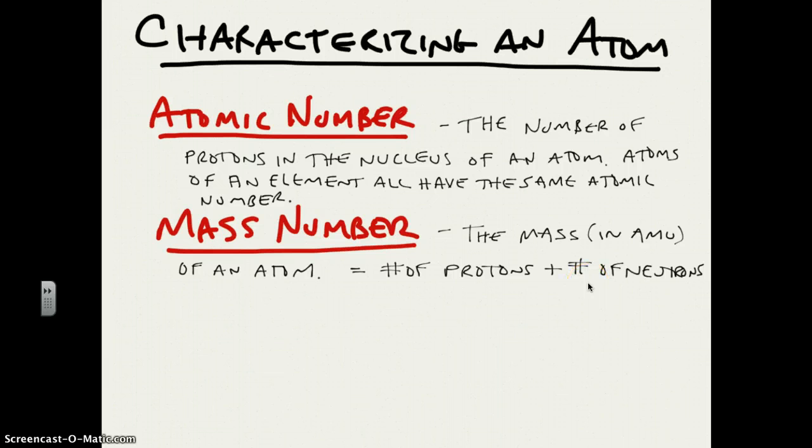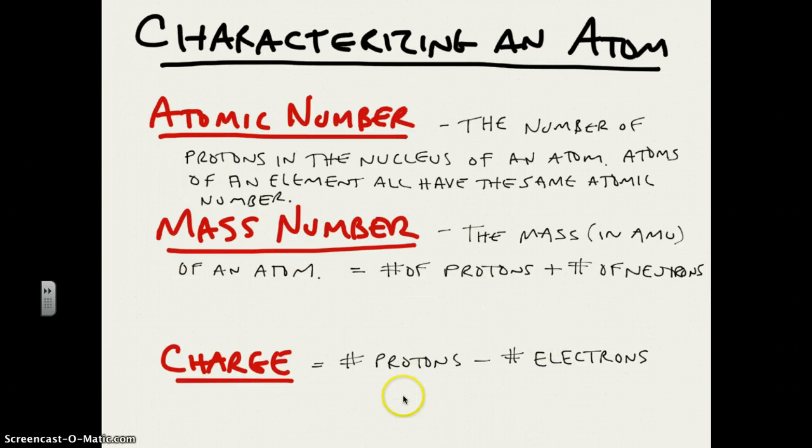The last thing we can say about an atom and characterize about it has to do with the balance between the number of positive protons and negative electrons, and that's the charge. We calculate the charge of an atom by subtracting the number of electrons from the number of protons. If the number of these is the same, the number of positive charges equals the number of negative charges, we have a neutral atom. If the number of positive charges is greater than the number of negative charges, we have a positive atom and vice versa. If the number of negative charges, electrons, is greater than the number of protons, we have a negative atom.